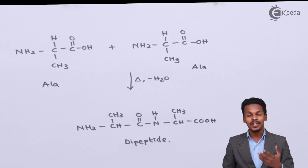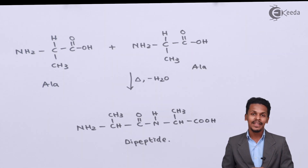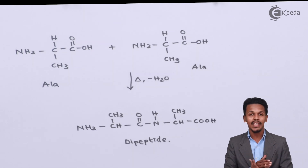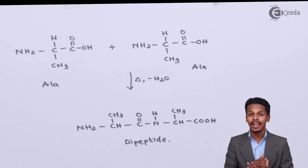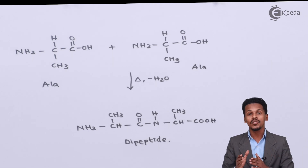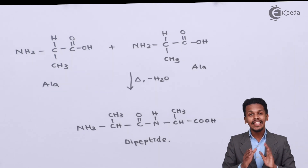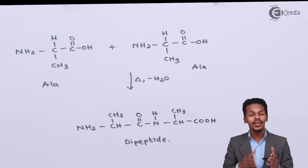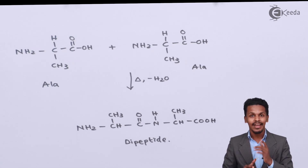Now let me talk about the next two possibilities. Suppose what happens if glycine is reacted with alanine. In that case, the glycine should be on the left-hand side and the alanine on the right-hand side. Let us observe what kind of dipeptide we could get.